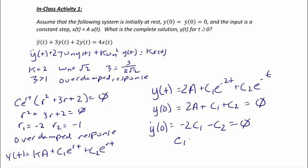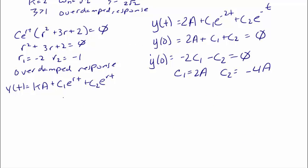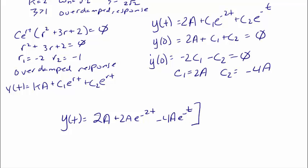Using substitution to solve the system of equations yields c1 equals 2a and c2 equals negative 4a. The final solution is y of t equals 2a plus 2a e to the negative 2t minus 4a e to the negative t. Because this solution is valid for t greater than or equal to zero, we multiply by u of t.